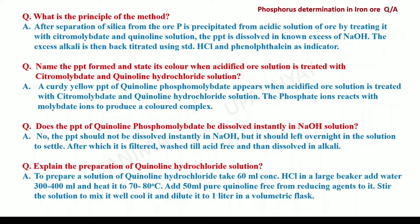How is the quinoline hydrochloride solution prepared? To prepare quinoline hydrochloride solution, 60 ml of concentrated hydrochloric acid is taken in a large beaker to which 300 to 400 ml of water is added. It is heated to around 70 to 80 degrees centigrade. To this, 50 ml of pure quinoline free from reducing agents is added. The solution is stirred for uniform mixing, then cooled and diluted to 1 litre in a volumetric flask.